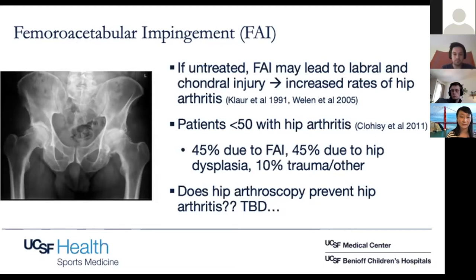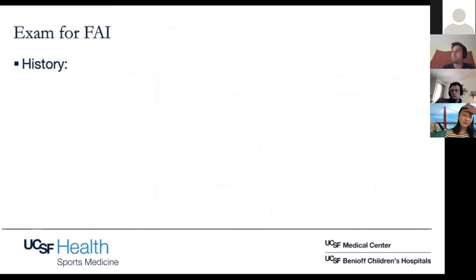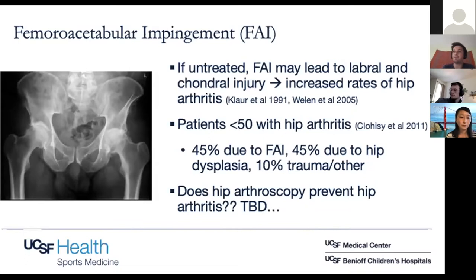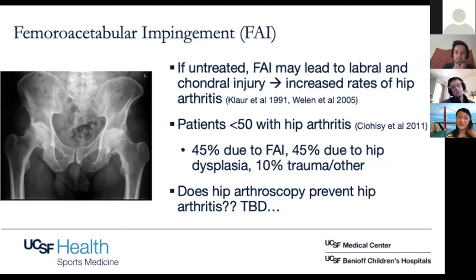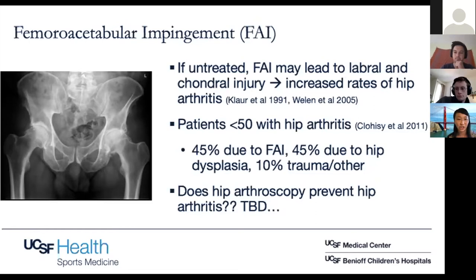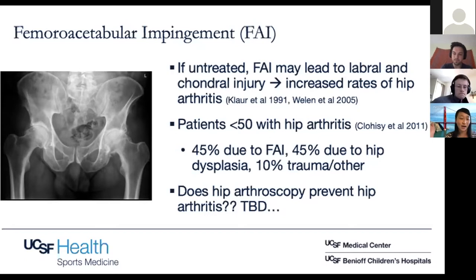A question came up: is the bony remodeling causing FAI, or is it a result of FAI? I think it's a bit different for cam versus pincer. For cam, that's abnormal bony remodeling over time as athletes do sporting activities. For pincer, that's just how you were born — born with a deeper socket, kind of the opposite of hip dysplasia. Natural history studies have looked at alpha angle and cam deformity in 11-year-olds versus 15-year-olds followed through sports, and it actually increases over time. So it's a bony remodeling issue, at least on the femoral side.